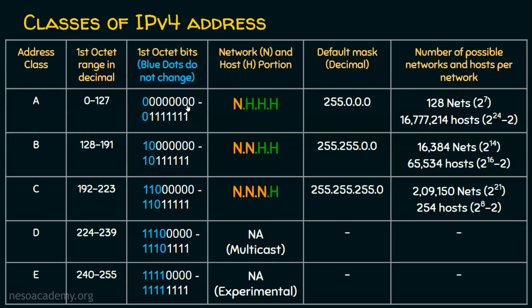These 7 bits define the network portion, giving 2^7 = 128 networks. For hosts per network: we have 32 total bits, and 8 bits are used for identifying the class and network, leaving 24 bits. So 2^24 hosts are possible per network, but only 2^24 minus 2 are usable. We always subtract two — one reserved for identifying the network address, and one for the broadcast address. In class A, there are fewer networks (128) but more hosts per network.